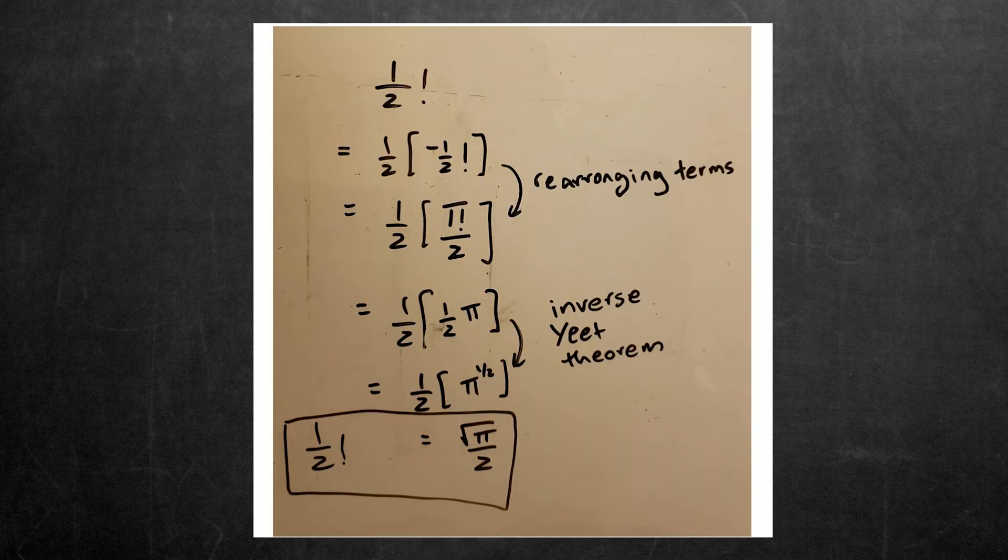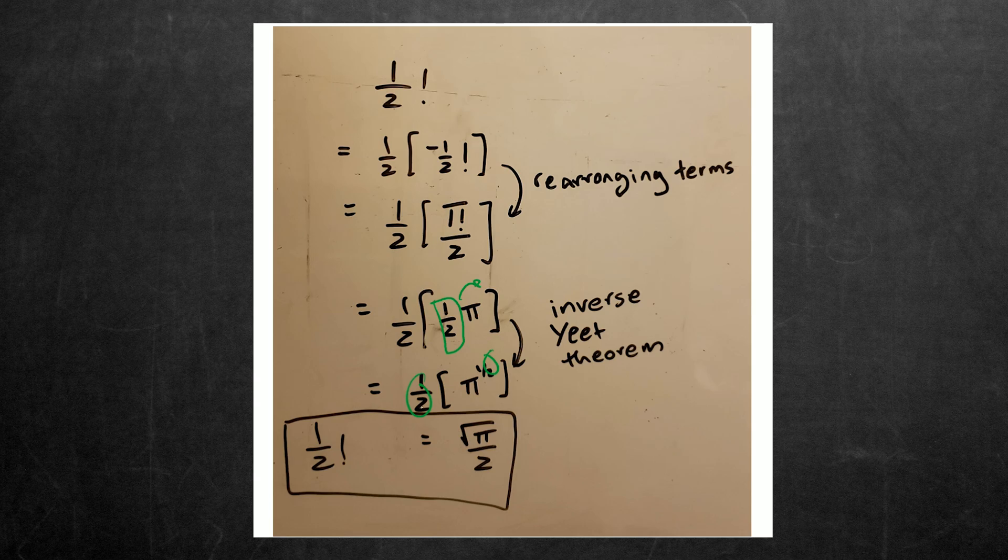Alright, so I don't have any sort of fancy proof for this one. But this is a use case for the inverse yeet theorem. Obviously the inverse yeet theorem step is down here. He takes the 1 half in this problem and yeets it up as an exponent to the pi. Which allows him to then cancel the like terms here. Or no, he doesn't cancel like terms. Sorry. He just changes this into a radical and puts the 2 on the bottom. Just easy stuff. But inverse yeet theorem can also be written as IYT. Standing for inverse yeet theorem. And it's pretty powerful. It helps you do a lot of stuff if you get stuck in a hole in your problem.